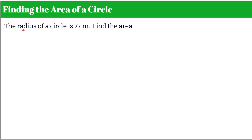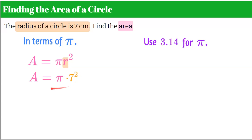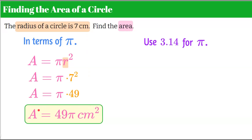Let's find the area of a circle where the radius is 7 centimeters, doing this two ways: in terms of pi, and using 3.14 for pi. Area equals pi times r squared. Replacing r squared with 7 squared: 7 times 7 is 49. Leaving it in terms of pi, the answer is 49 pi centimeters squared. That is the exact area of this circle.